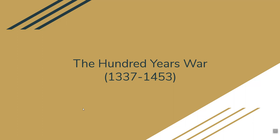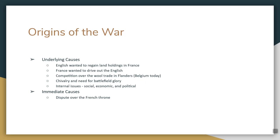First thing: the Hundred Years' War, 1337 to 1453. Notice that's not 100 years — it actually lasted longer than that. But 100 years is a lot easier to say than 118 Years' War. A couple different reasons this war starts. There are some underlying causes. The English wanted to regain land they were technically in charge of in France but didn't actually control, going all the way back to 1066 and the Battle of Hastings, and it had been simmering underneath everything else for years.